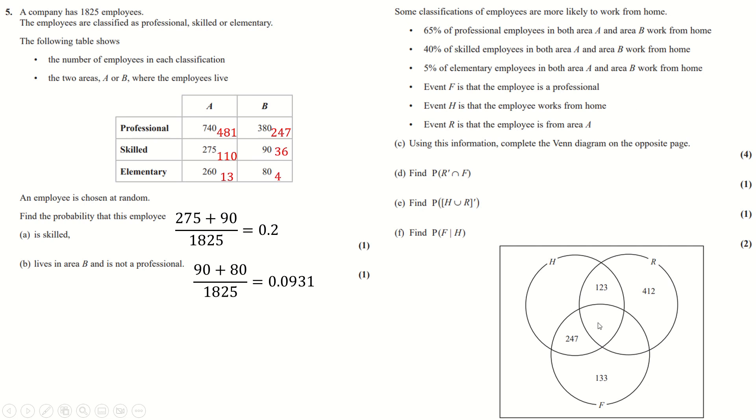The easiest thing to start with here is right in the center. How many people both work from home, from area A and also are a professional. And because that's not too hard to see, it's going to be just this number here. The red is the ones that work from home and they're in the A and professional column, so 481 needs to go in the middle here.